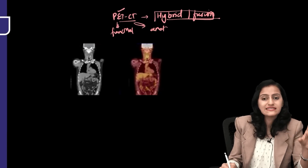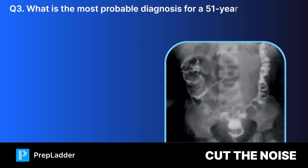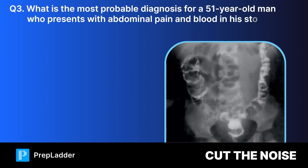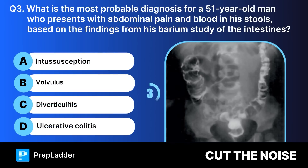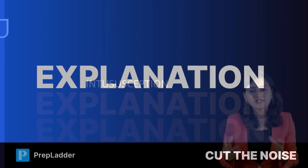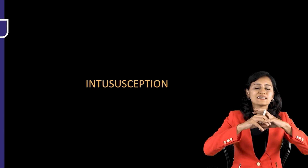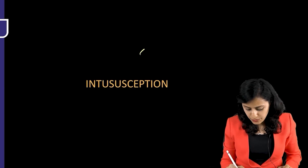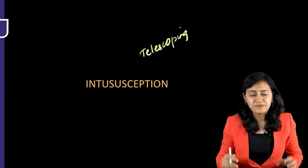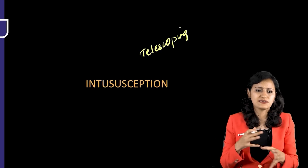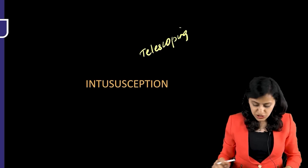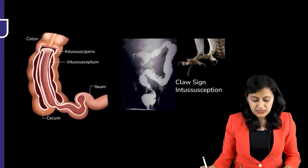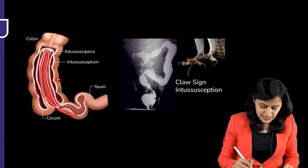Question three: A 51-year-old man presents with abdominal pain and blood in stools. Based on barium study findings, the correct answer is intussusception. Intussusception is the telescoping of one bowel going inside another. It is common in children at weaning age where Peyer's patches and lymphoid hyperplasia act as a lead point.